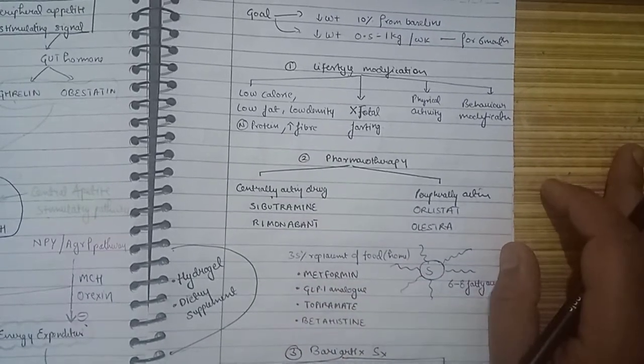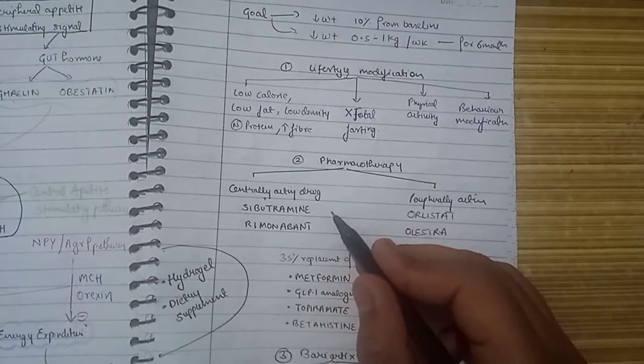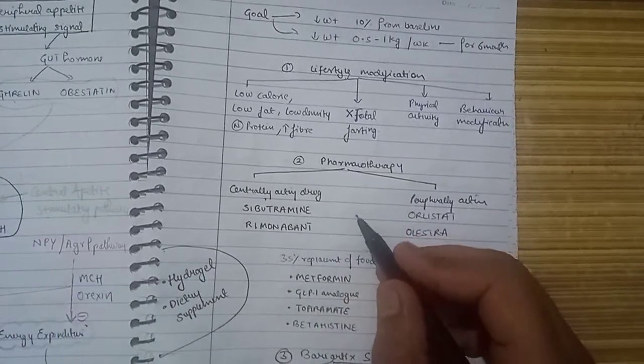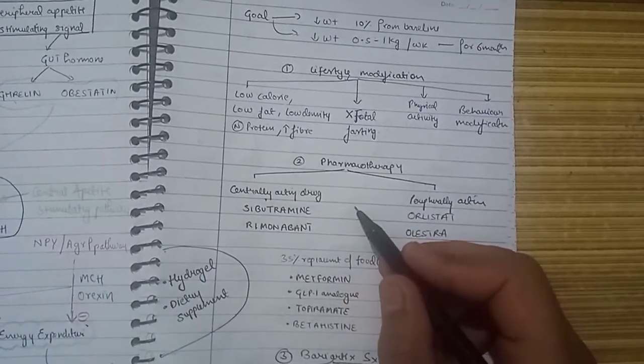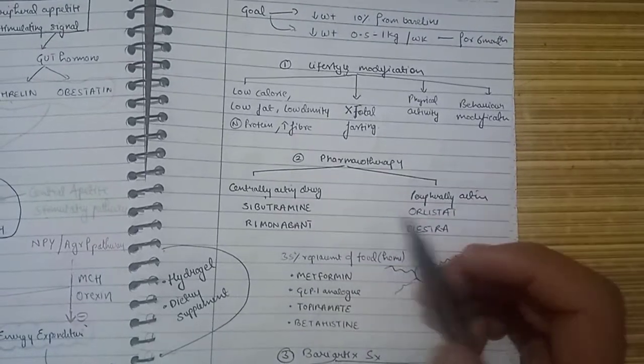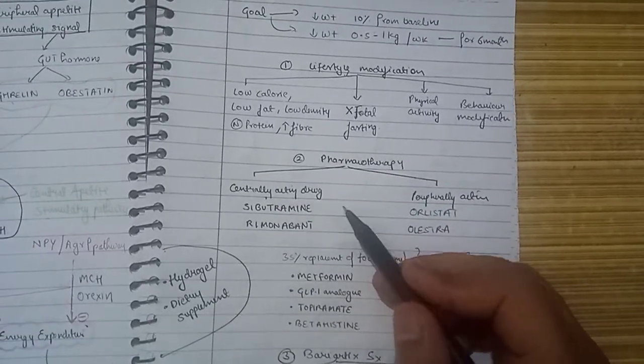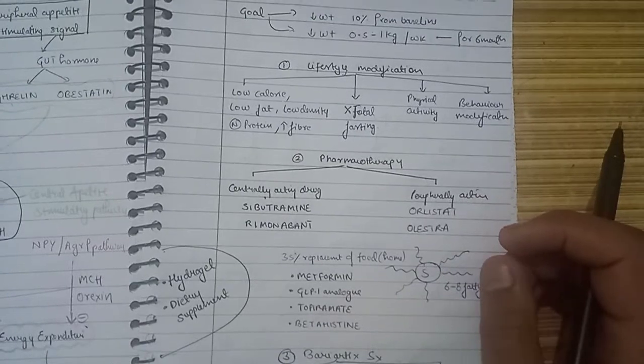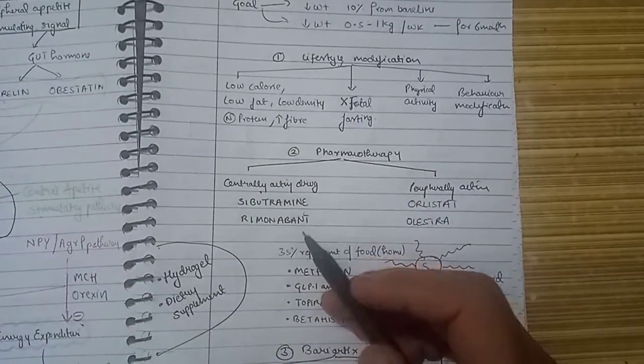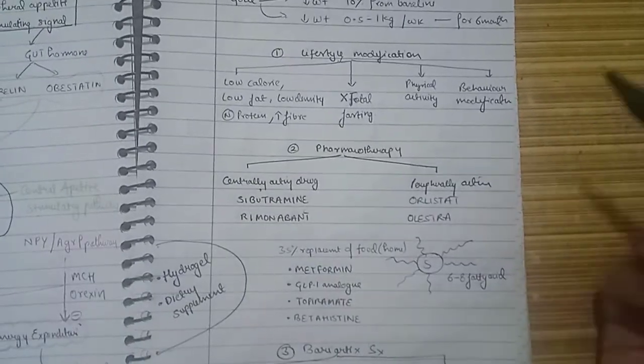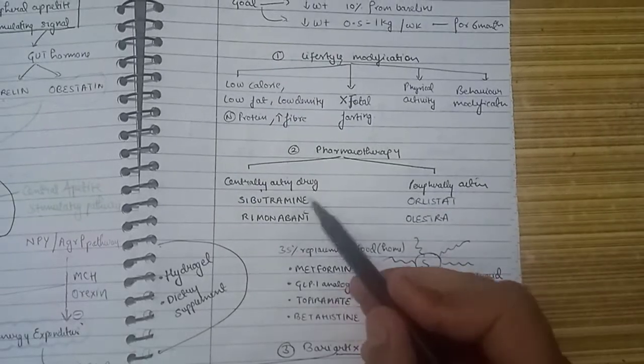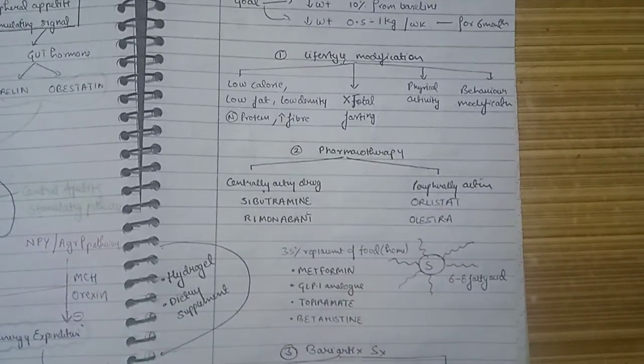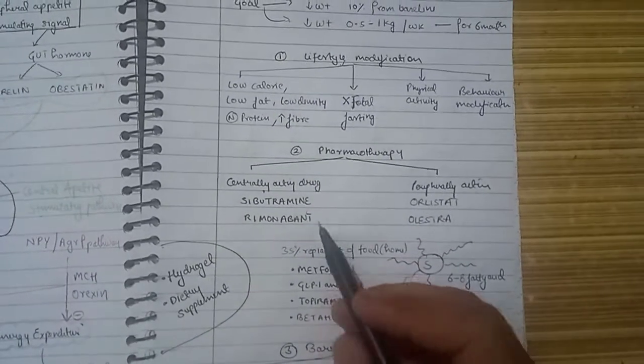Sibutramine increases the level of norepinephrine and serotonin, which maintain the basal metabolic rate and thermogenesis, helping to decrease obesity. However, these are contraindicated in coronary artery disease and hypertension. The US FDA has now not approved this drug.